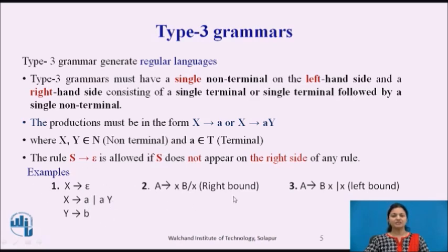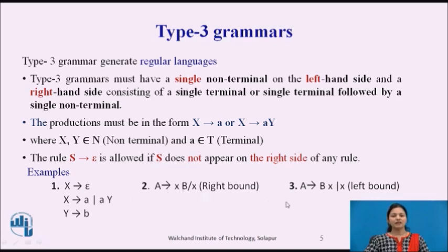Here X and Y are non-terminals and A is a terminal. The rule X → null is allowed if S does not appear on the right-hand side of any production. Some examples: X → null, X → A or X → AY, Y → B, A → XB or X, and A → BX or X.